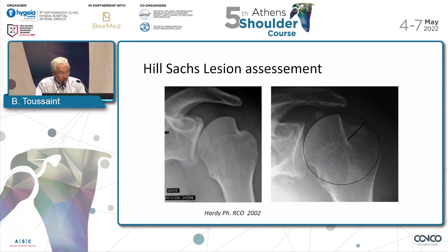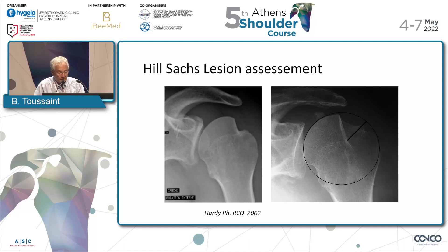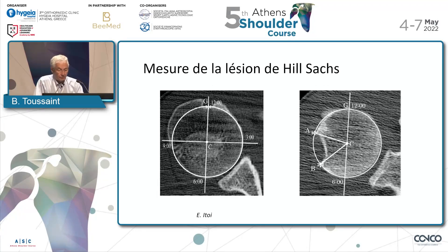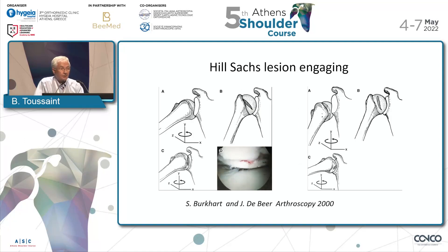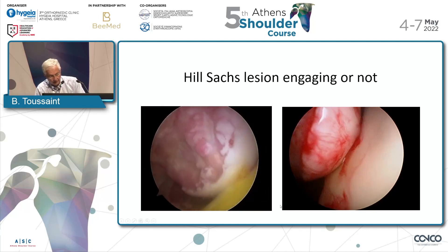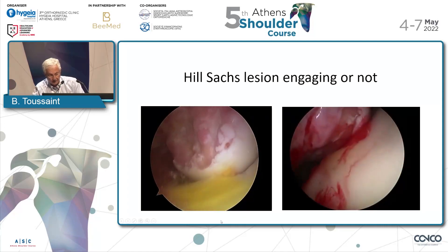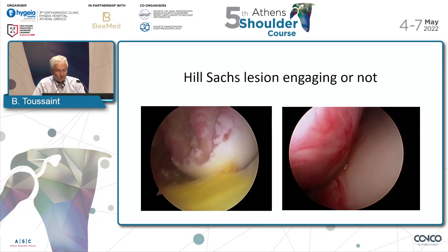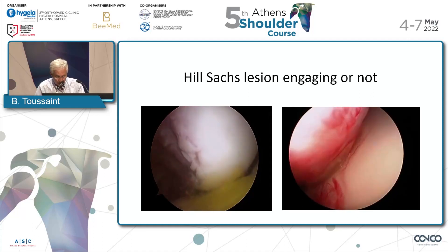The other bone defect is the humeral bone defect — it is very important to check it. The first definition of the deepness of the Hill-Sachs lesion was described by Philippe Hardy with the internal rotation view. Itoi described another technique on CT scan, but the most important point is the definition of the Hill-Sachs lesion engaging, described by Steve Burkhardt and Joe DeBier. One position is not engaging and another is engaged, and the treatment could be different for each.